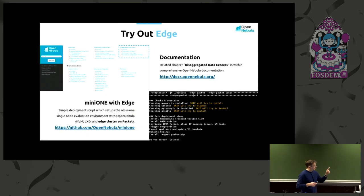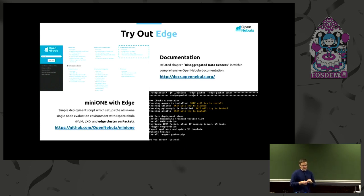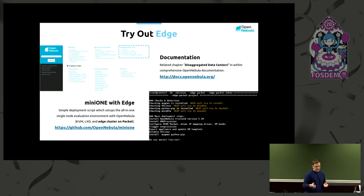About the documentation: if you go to docs.opennebula.org, there is a section called Aggregated Data Centers, which describes all these things, the tooling, how to write the provision descriptor, what configurations you can use, and how to parameterize it. I also mentioned the MiniOne tool, which usually deploys just a KVM or LXD single host in an evaluation environment, but it can also deploy the edge. It just needs some parameters like provider selection, a token, and a project, and it does everything automatically.